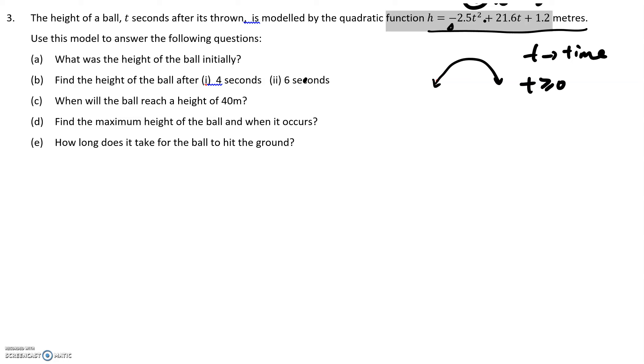Okay, so let's keep looking. What was the height of the ball initially? So basically, initially, that means t equal to 0. So what you need to do is set in t equals to 0. So negative 2.5 times 0 to the power 2 plus 21.6 times 0 plus 1.2. So height 0 equals to 1.2 meters, that's it. Initial is always the 0.